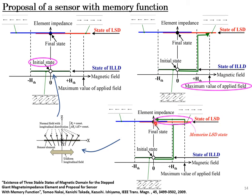Therefore, this sensor memorizes the event of magnetic field application. When a distributed field would be applied, the memorized state can be reset to the initial state.